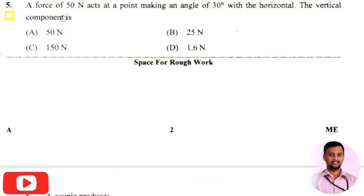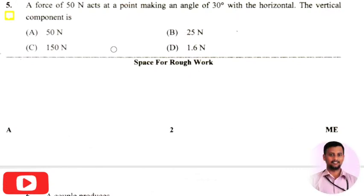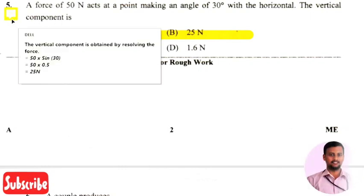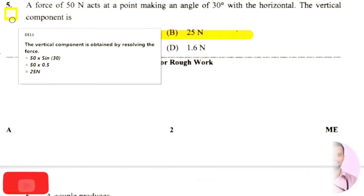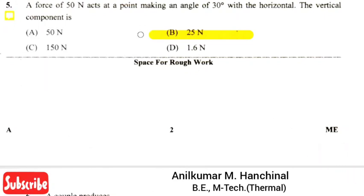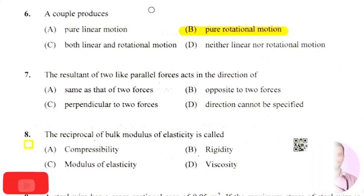The next question: a force of 50 Newton acts at a point making an angle of 30 degrees with the horizontal. The vertical component — the right answer is option 2, that is 25 Newton. The vertical component is obtained by resolving the forces. Since the angle is 30 degrees, we consider sin 30. So 50 multiplied by sin 30 gives 25 Newton. A couple produces — the right answer is option 2 — pure rotational motion.